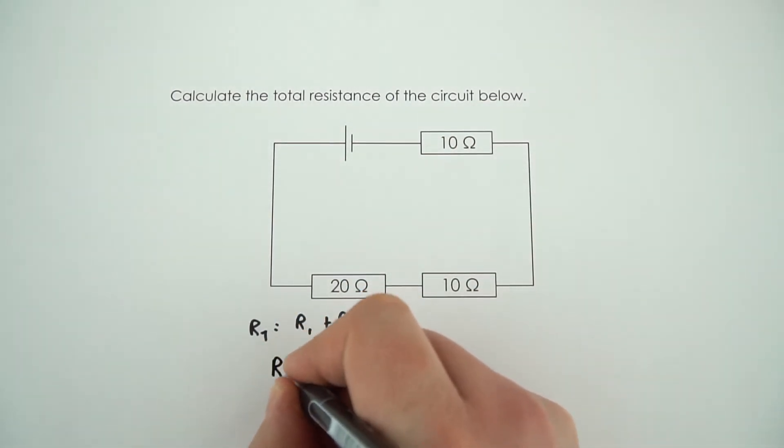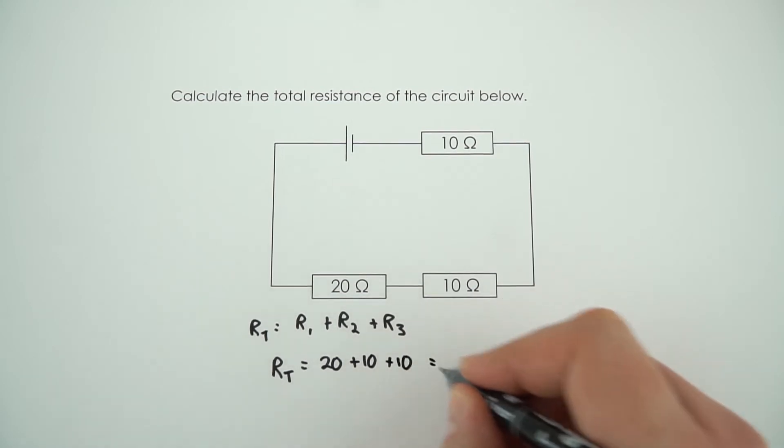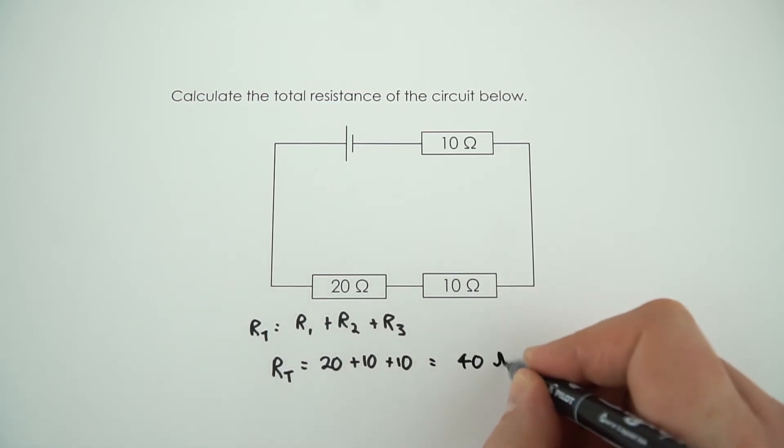So the total resistance, I'm just going to call that RT, is equal to 20 plus 10 plus 10, which is a total value of 40 ohms.